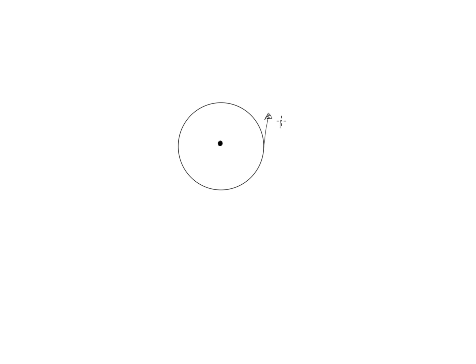Similarly, we can change an object's rotational state of motion with a net or unbalanced torque. So let's say you have this disk, and it can rotate about this axis of rotation. If I exert a force on the disk like that, I'll get the disk to start to rotate counterclockwise. Now, this force is exerting a torque on the disk, and that's causing it to have an angular acceleration. That angular acceleration is equal to the net torque acting on the disk divided by the disk's moment of inertia. In other words, this is Newton's second law, but for rotation.